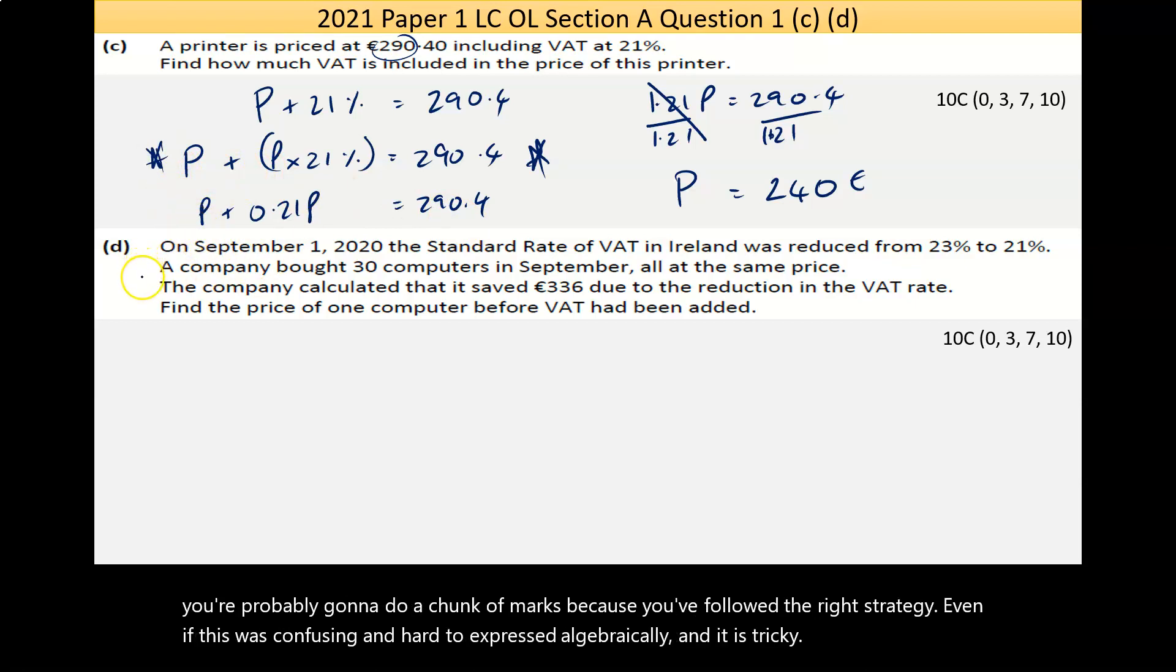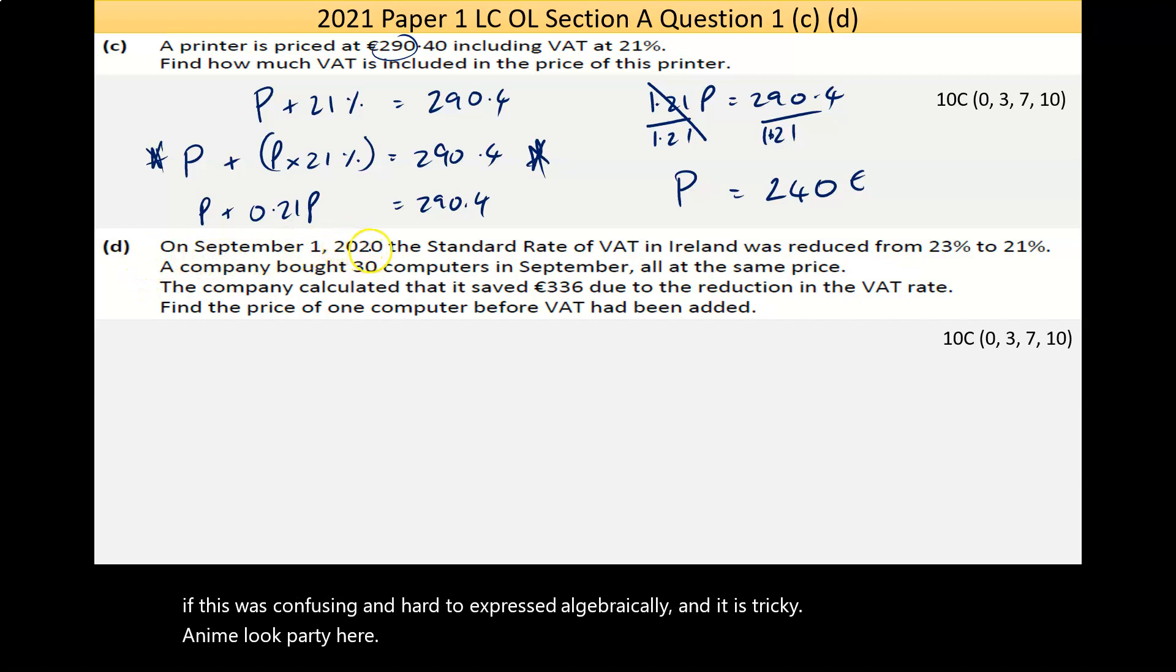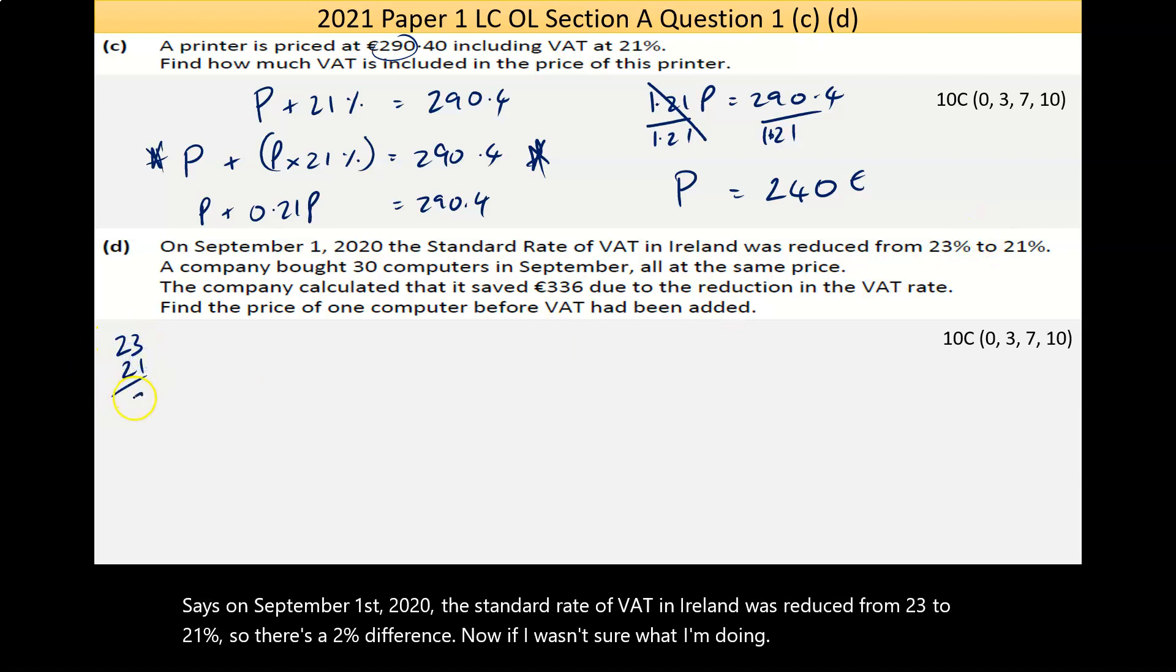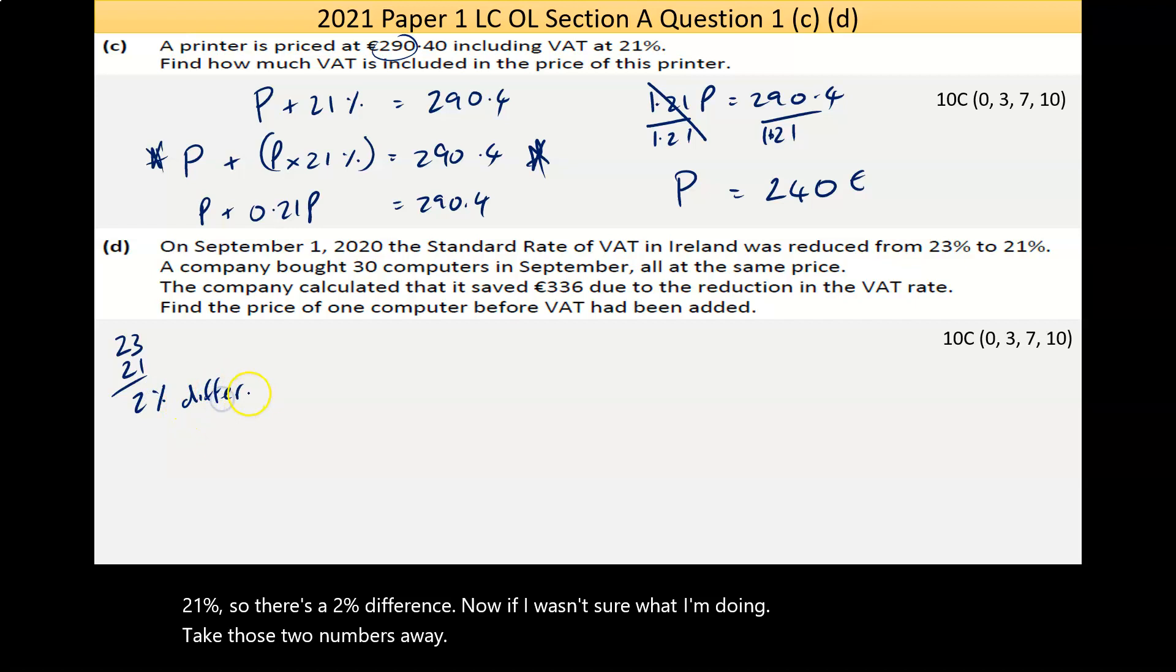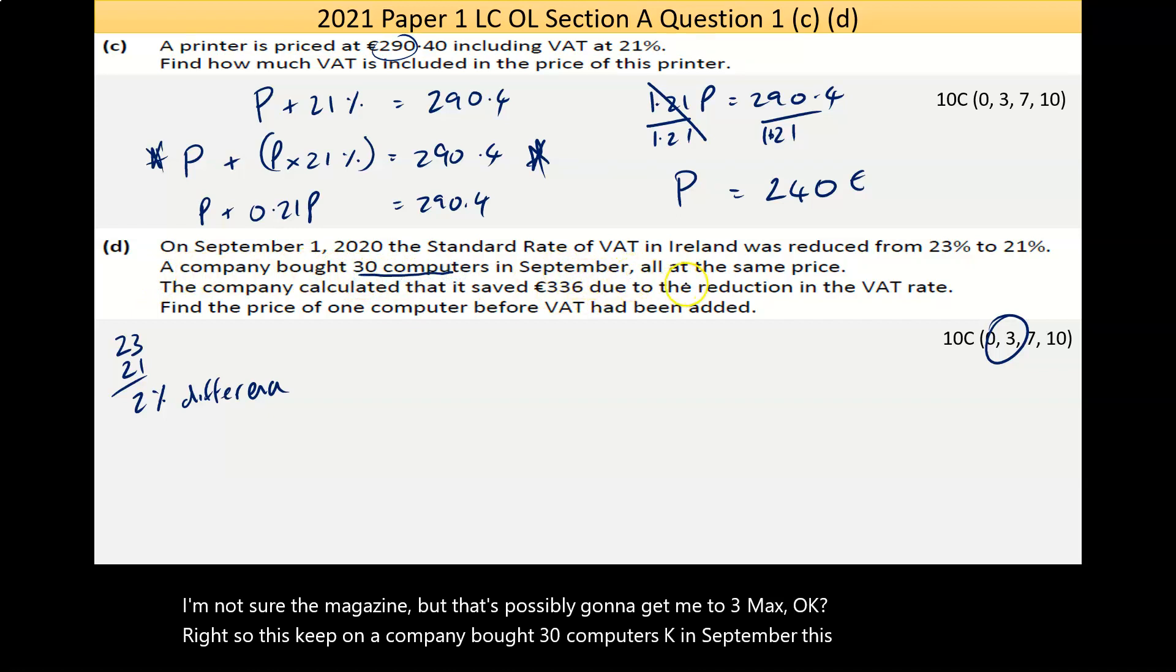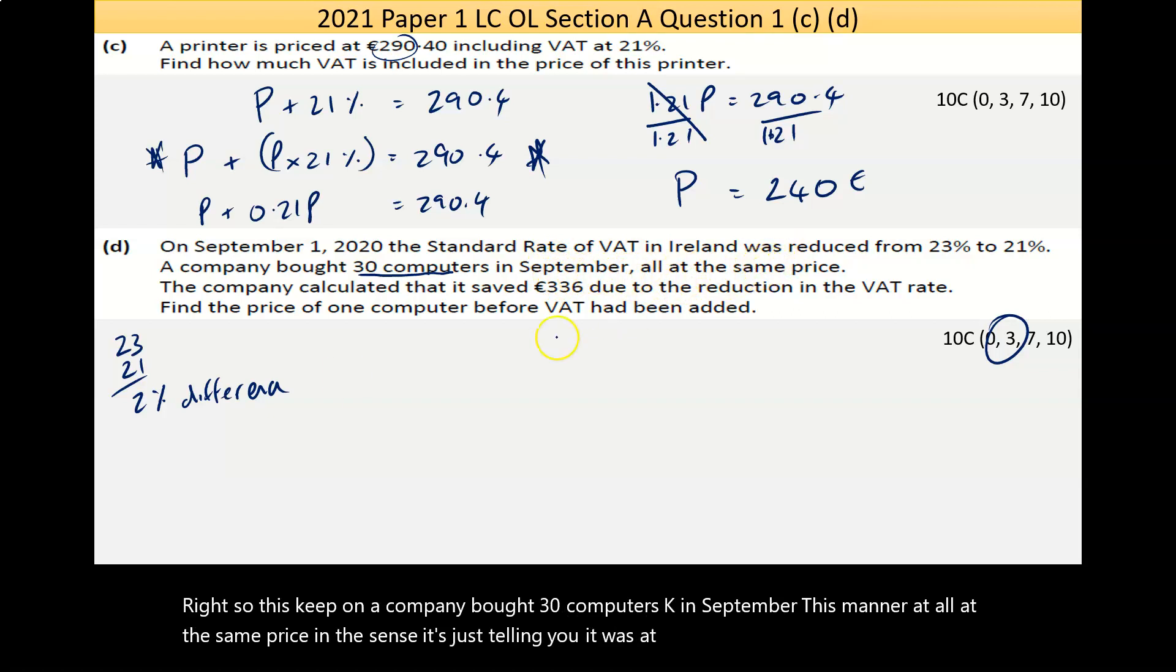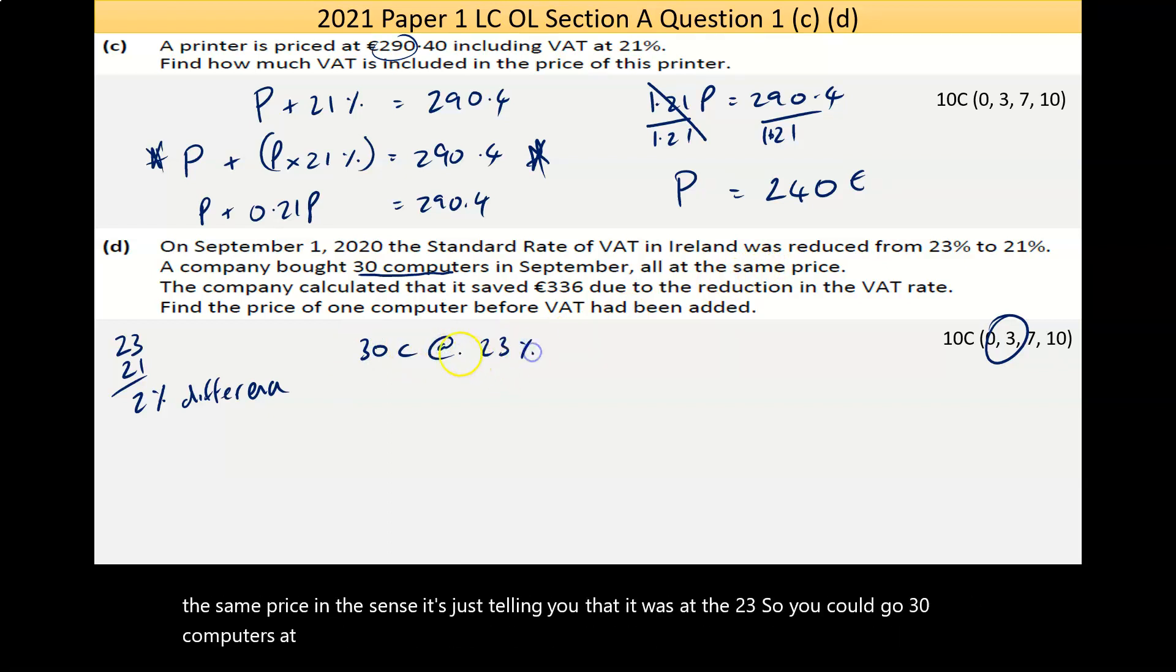Part D here says on September 1st 2020, the standard rate of VAT in Ireland was reduced from 23% to 21 percent, so there's a two percent difference. If I wasn't sure what I'm doing, take those two numbers away, and that's possibly going to get me three marks. A company bought 30 computers in September at the same price - it's just telling you that it was at the 23 percent.